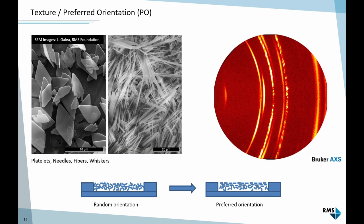The next effect is texture or preferred orientation - you may hear both names equally. It occurs when crystals are either platelets, needles, fibers, whiskers, rods - some anisotropic shape. We want perfectly randomized orientation in our sample. But with these shapes, once we press the powder into the sample holder, we create an orientation at the surface. The surface layer that interacts with the radiation is no longer randomized.